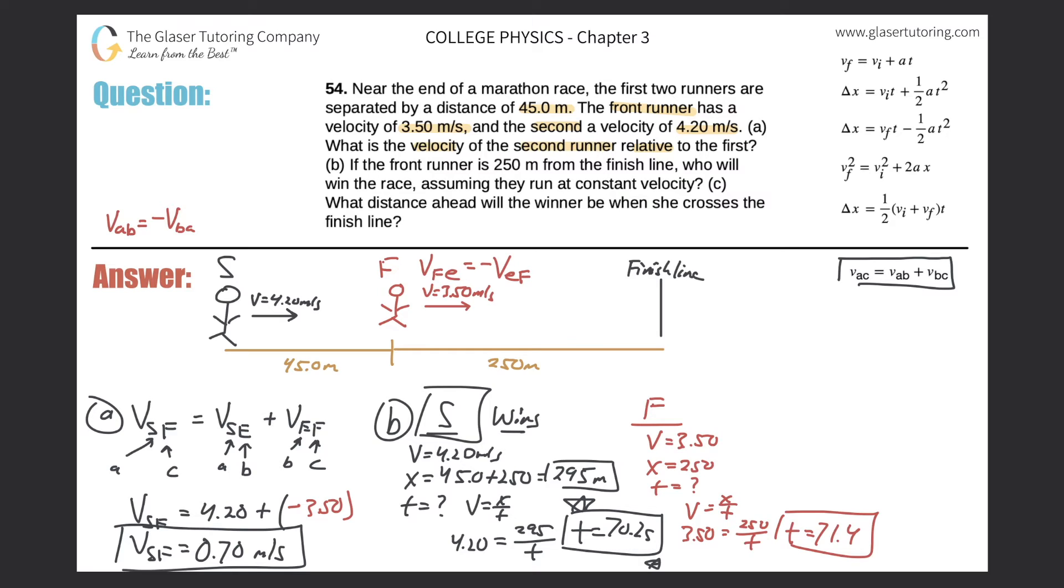Then letter C now. What distance ahead will the winner be when she crosses the finish line? So basically what we want to do is this is the time in which the second runner will win. So let's figure out where the first runner will be at 70.2 seconds. The velocity of that first runner is the same 3.50. The displacement, that's actually what we're looking for in this case. And the time is going to be 70.2.